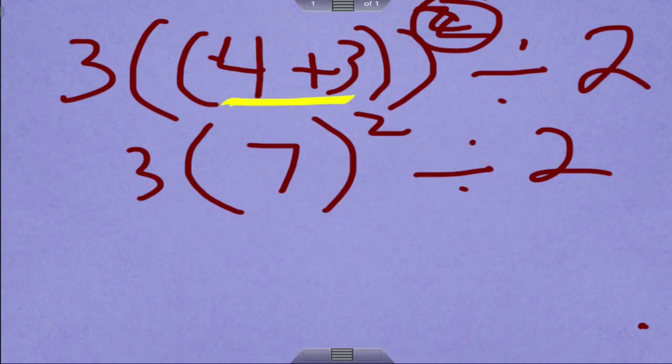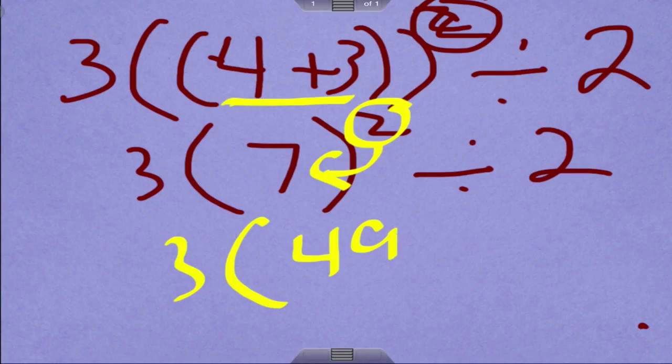Next thing I need to do is, again, my parentheses. But I have an exponent there. So I have to do this right here. So what I do is, and this is what I'm doing, I'm squaring the 7. So I have 3 times, when you have a 3 next to parentheses or a number next to parentheses, that means times 49 divided by 2.